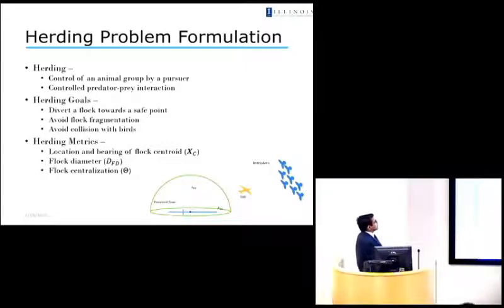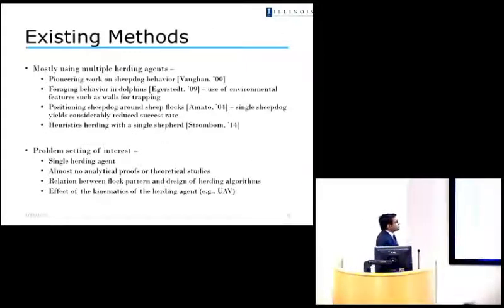So there have been some methods that have been proposed in the past two decades or so regarding controlling of groups of animals, groups of robots. The most relevant one of them is a very recent paper by Strombom, which came out in 2014, where they implanted GPS chips on sheep and dogs and tried to see how a sheep dog actually goes and tries to herd the sheep. And then they tried to get some heuristics out of them.